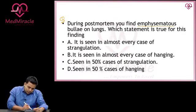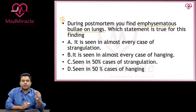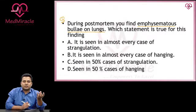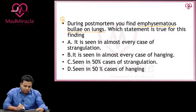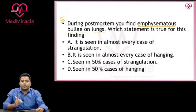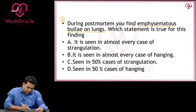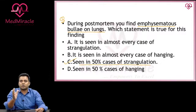Next question: during postmortem you find emphysematous bullae on lungs. Key point — the finding is over the lungs. Emphysematous bullae are air-filled cavities present over the lungs. Always remember this is an important finding of strangulation deaths, but it is not seen in all cases. The correct answer is option C — it is seen in 50 percent of cases of strangulation.